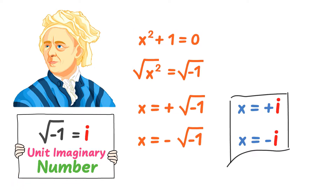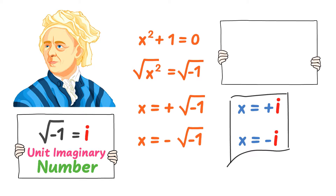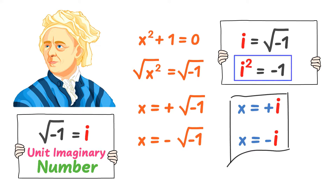Therefore, remember that square root of negative 1 is equal to i, the unit imaginary number. Also, remember that if you take the square on both sides, you will get i squared is equal to negative 1. That's why we play with different powers of i in mathematics.